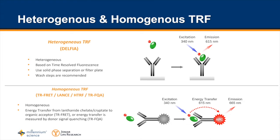You get an energy transfer and then detect the emission at a further red-shifted wavelength. In a homogeneous assay you excite at 340 and read at 615 and 685, because it is a ratiometric assay. So you need to determine the portion of signal that comes from the bound moiety as opposed to the unbound moiety.